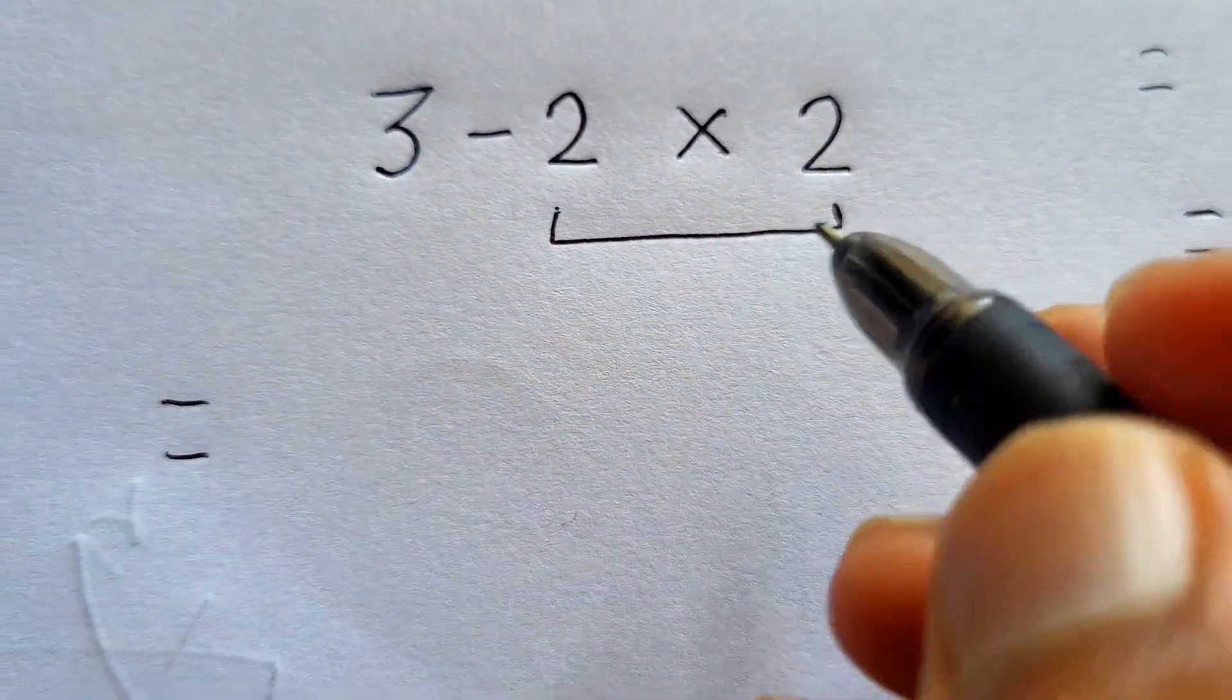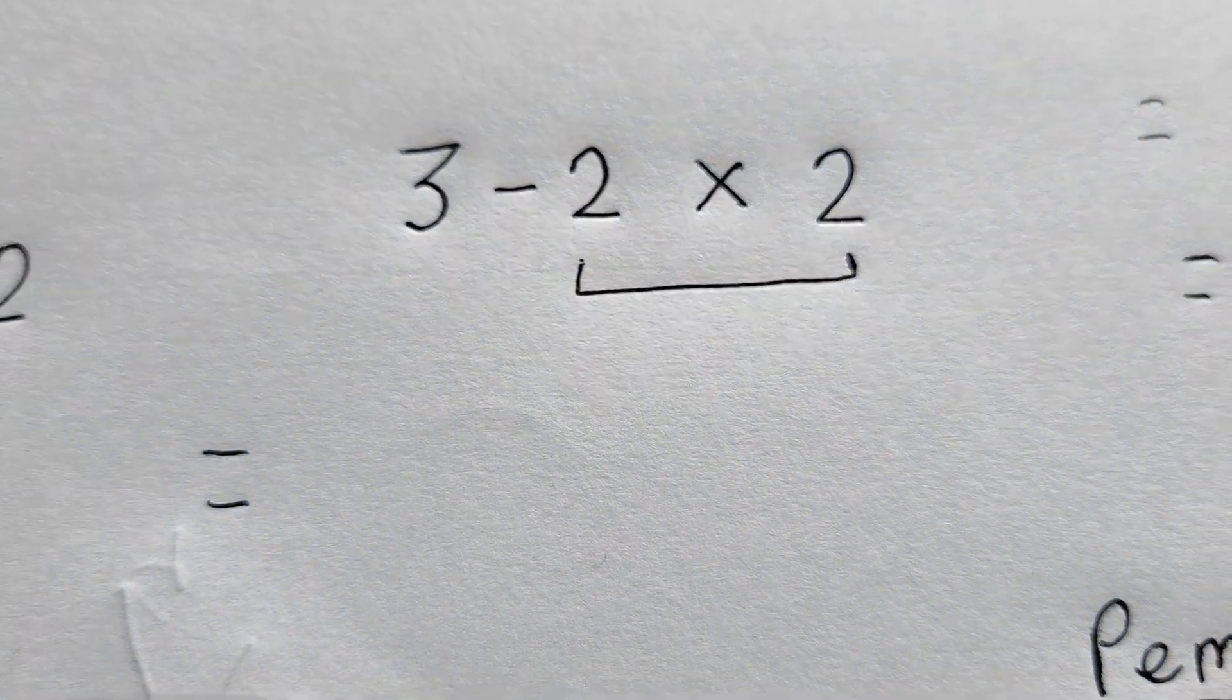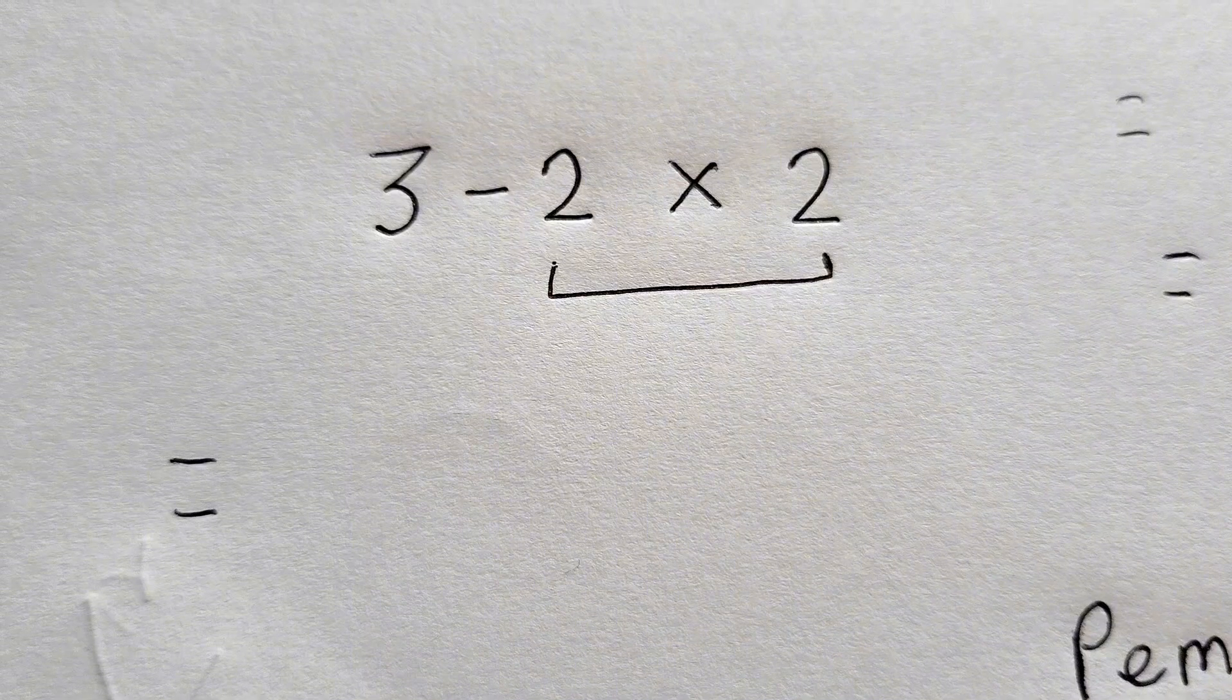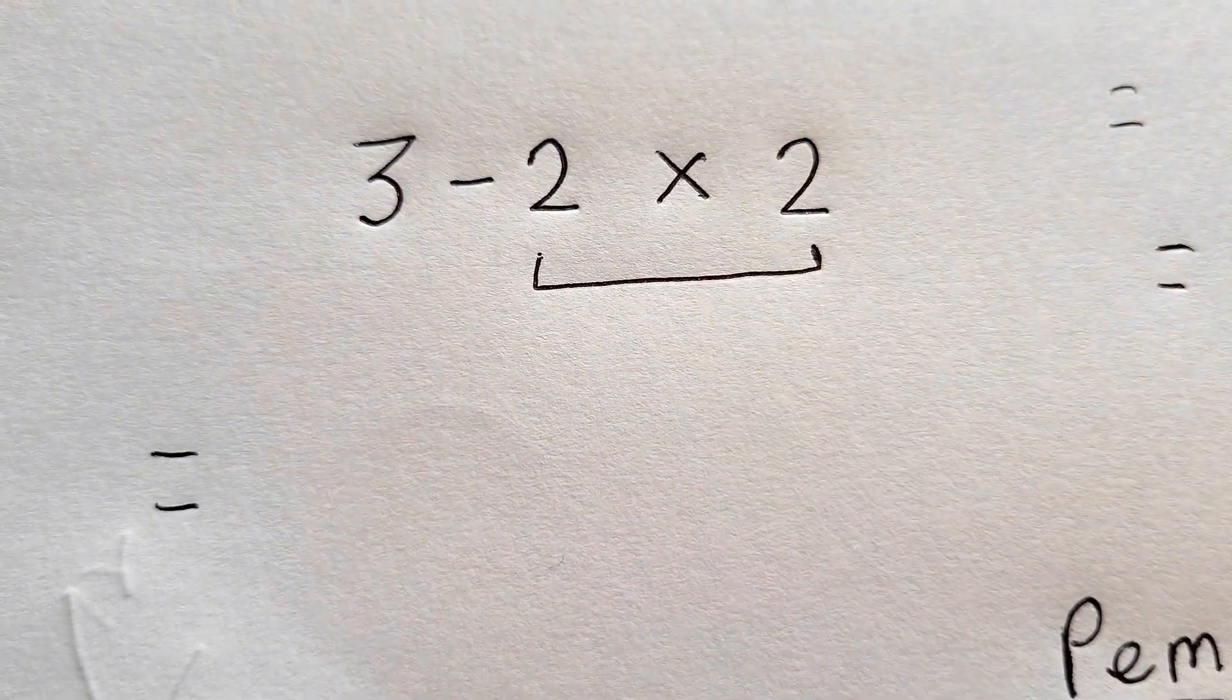That is minus 2 times 2, instead of solving 3 minus 2. We'll first solve minus 2 times 2, which gives us minus 4.